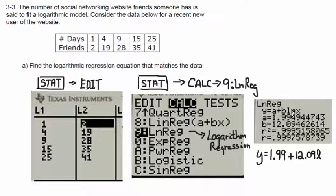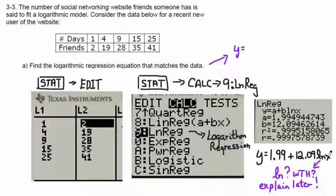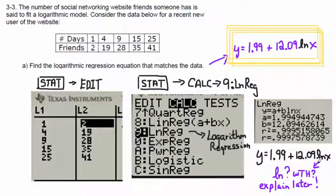When you do all that, it tells you this fancy formula. Rounding it off a bit, it says y equals 1.99 plus 12.09 times the ln — the logarithm — of x. You're going, what the heck is a logarithm? Don't worry about it. Just do what the computer tells you. You don't need to understand. The plastic brain told us that — it's the same steps as we've always done.